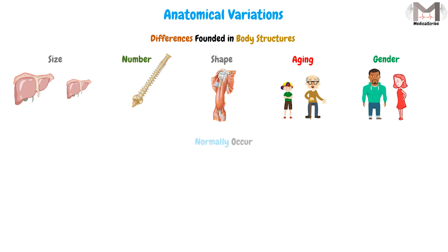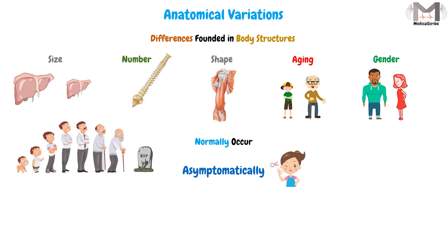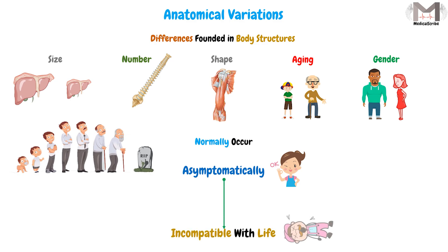These differences normally occur between people and mostly will be asymptomatic and don't cause any problems to the person — they may grow up and die without discovering it. But it can differ in the degree of severity, from asymptomatic to incompatible with life, meaning the person cannot live because of this variation.